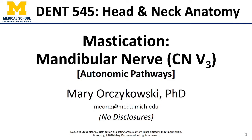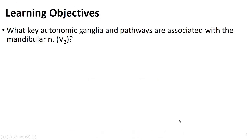Hello everyone, this is Dr. O. Welcome back. This is the second part of the mandibular nerve or V3 video, and here we'll talk about the autonomic pathways that follow V3. The trigeminal nerve is not parasympathetic in its origin, but there are four cranial nerves that are — 3, 7, 9, and 10. The trigeminal nerve has a large distribution in the head, so many of these nerves will follow trigeminal pathways to their target organs. Specifically, we'll look at which key autonomic ganglia and pathways are associated with the mandibular nerve or V3.